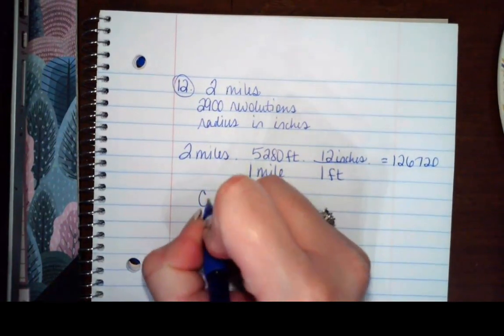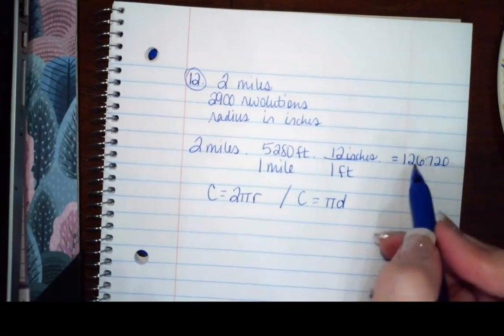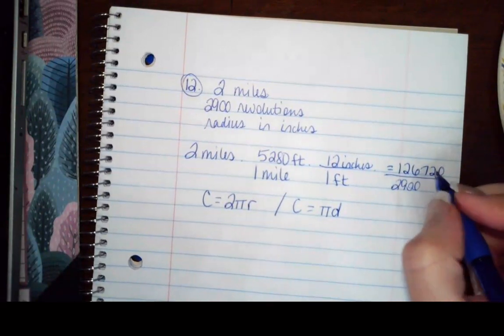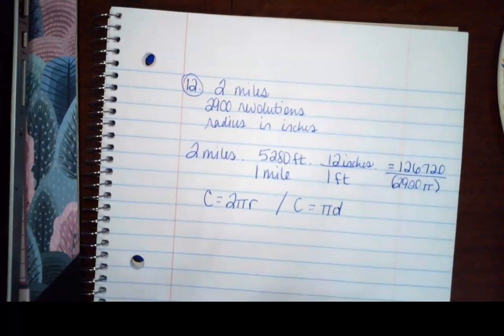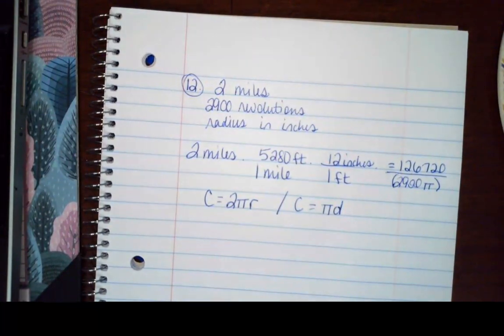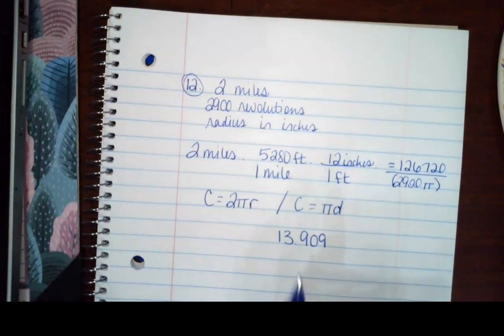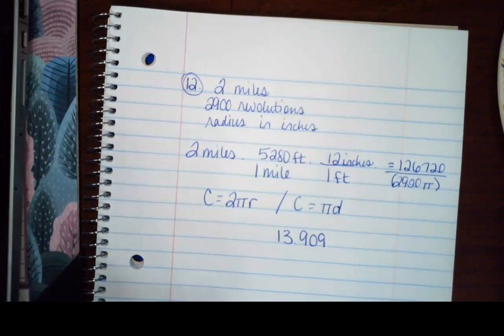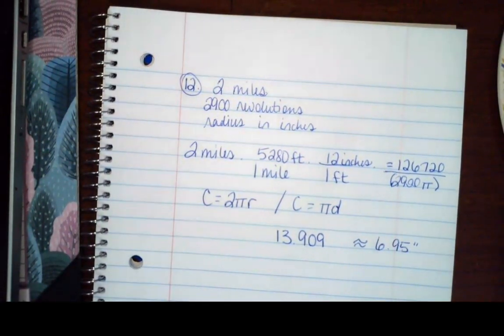Well, remember that the circumference is 2πr, or the circumference is π times the diameter. So I'm going to take this number divided by my 2,900 revolutions times π. In your calculator, make sure you put that in parentheses. So 126,720 divided by 2,900π is going to give me 13.909. But that's the diameter, so I need to take half of that. So divide that by 2, and I get 6.95. Those are very small tires.